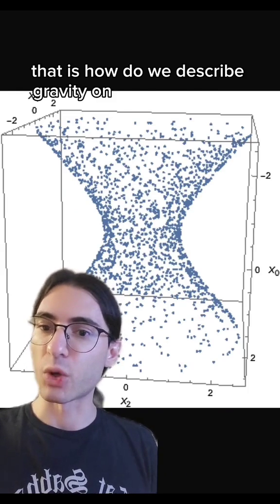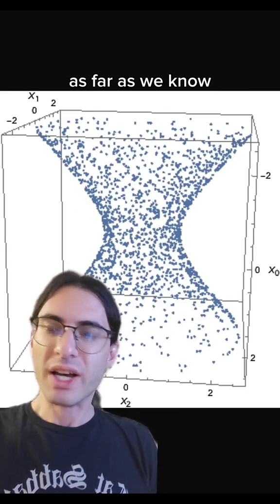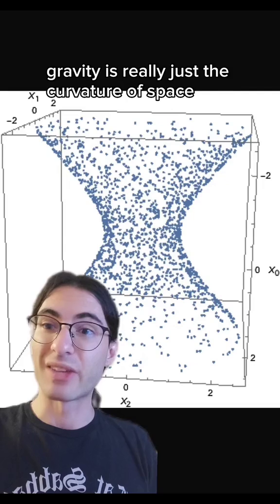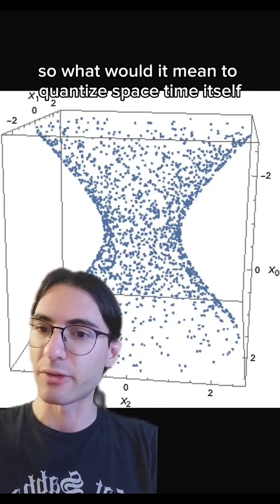That is, how do we describe gravity on a quantum scale? And the reason that problem is hard is because as far as we know, gravity is really just the curvature of spacetime. And usually physics takes place on spacetime. So what would it mean to quantize spacetime itself?